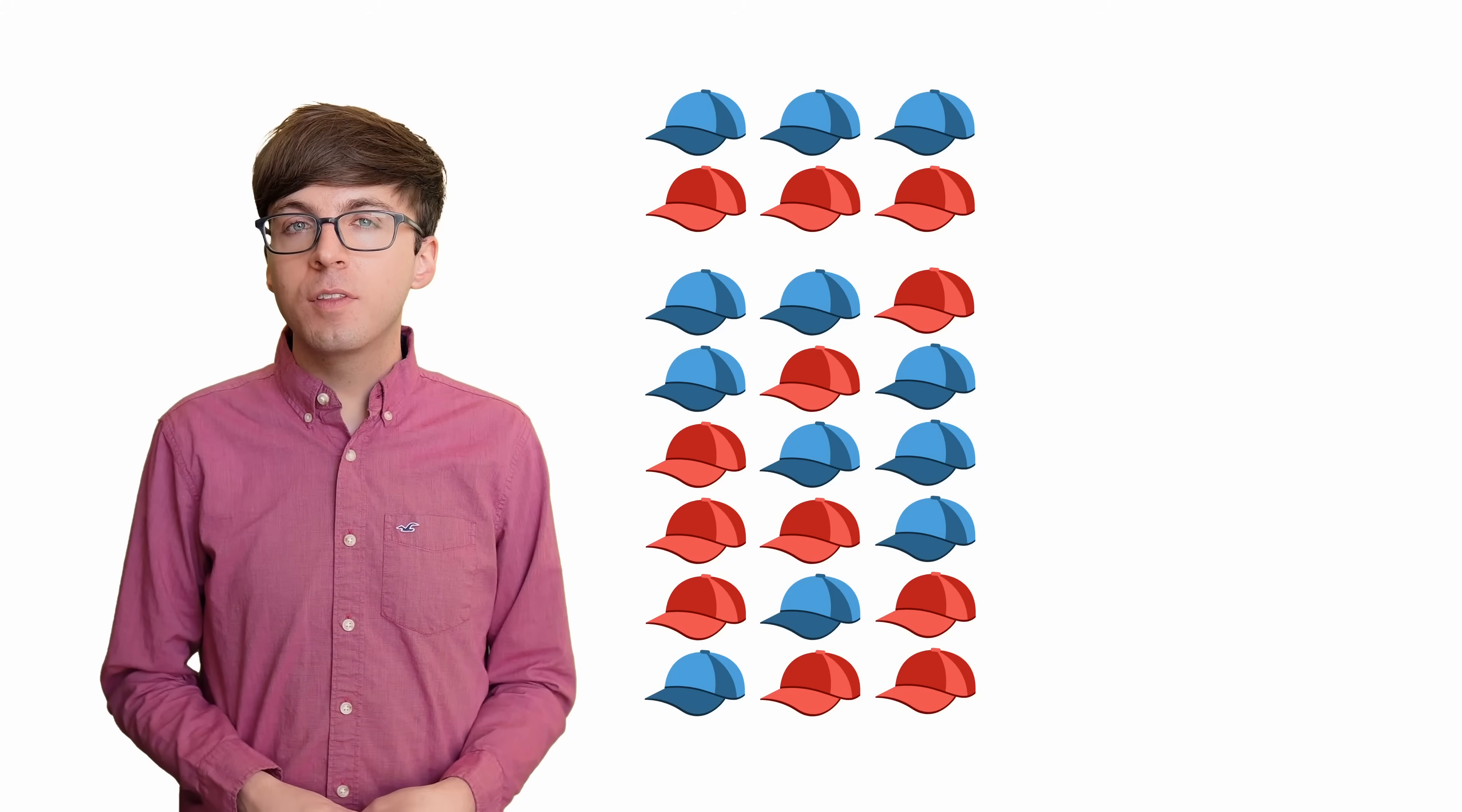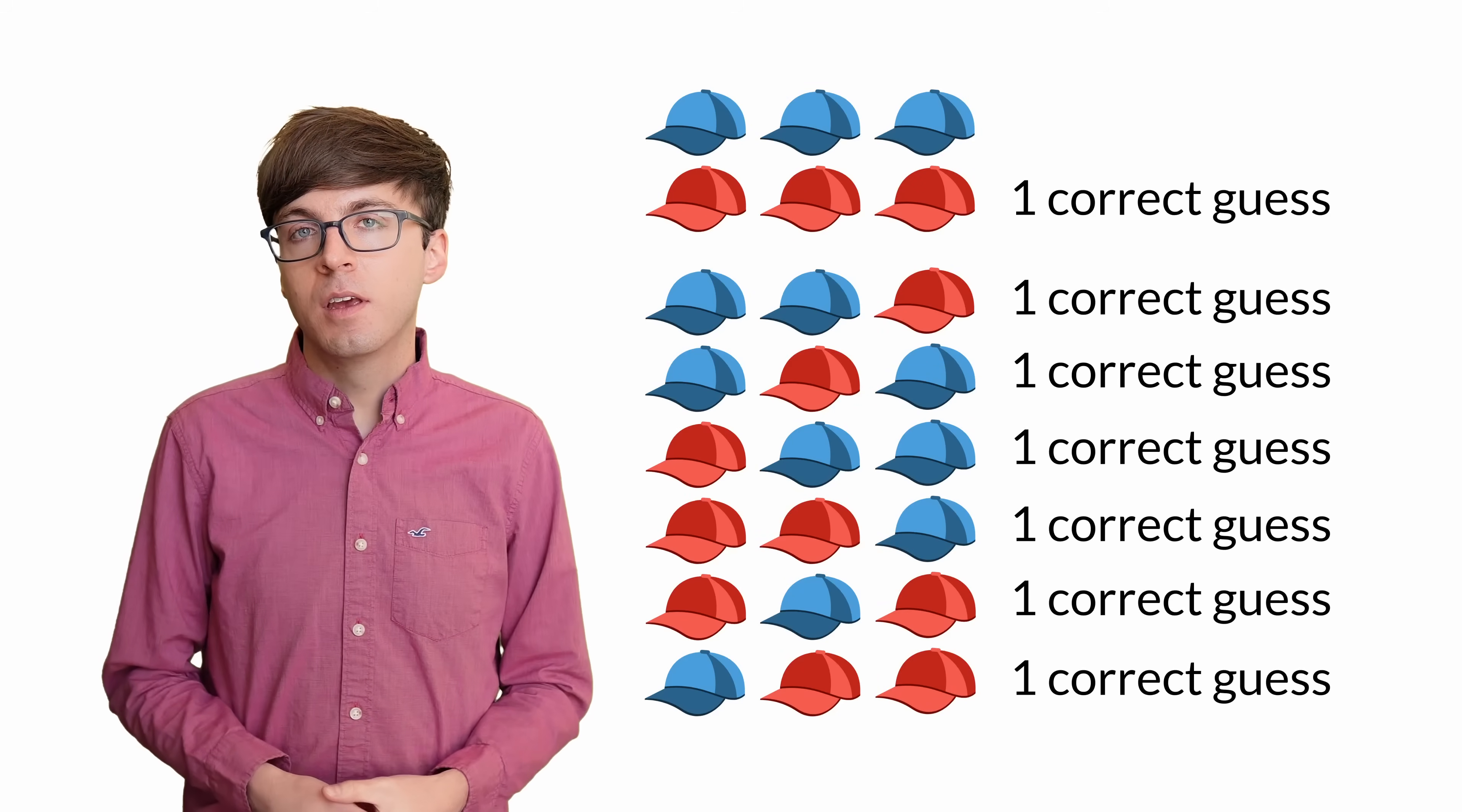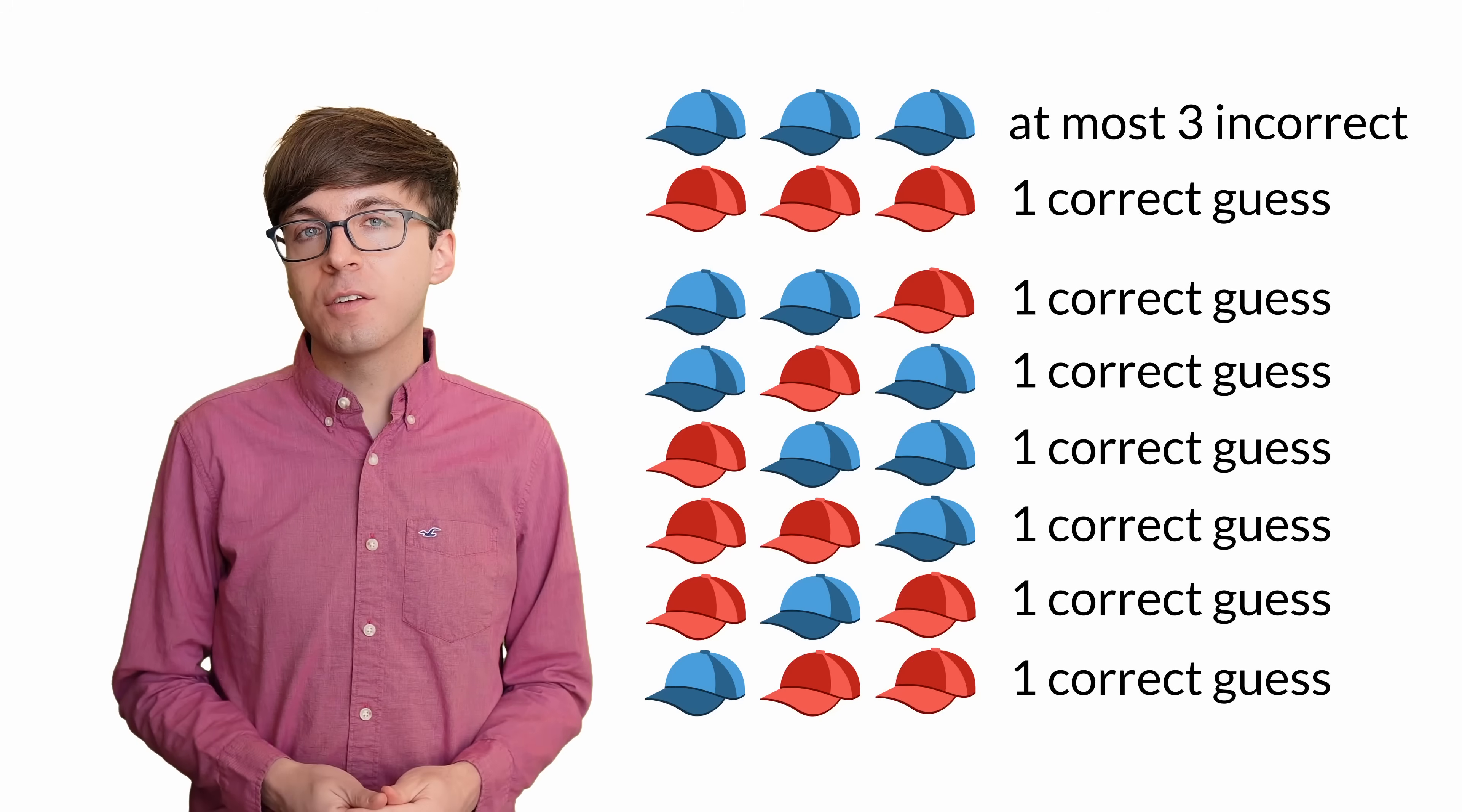Could there be a better strategy than this? Well, there must be an equal number of correct and incorrect guesses among all the possible outcomes. If the prisoners can win in seven of the eight cases, then that's at least seven successes. But there's no way to put seven incorrect guesses in the one remaining case. Even if they all guess incorrectly, that's only three incorrect guesses. So the strategy we found is the best possible strategy.